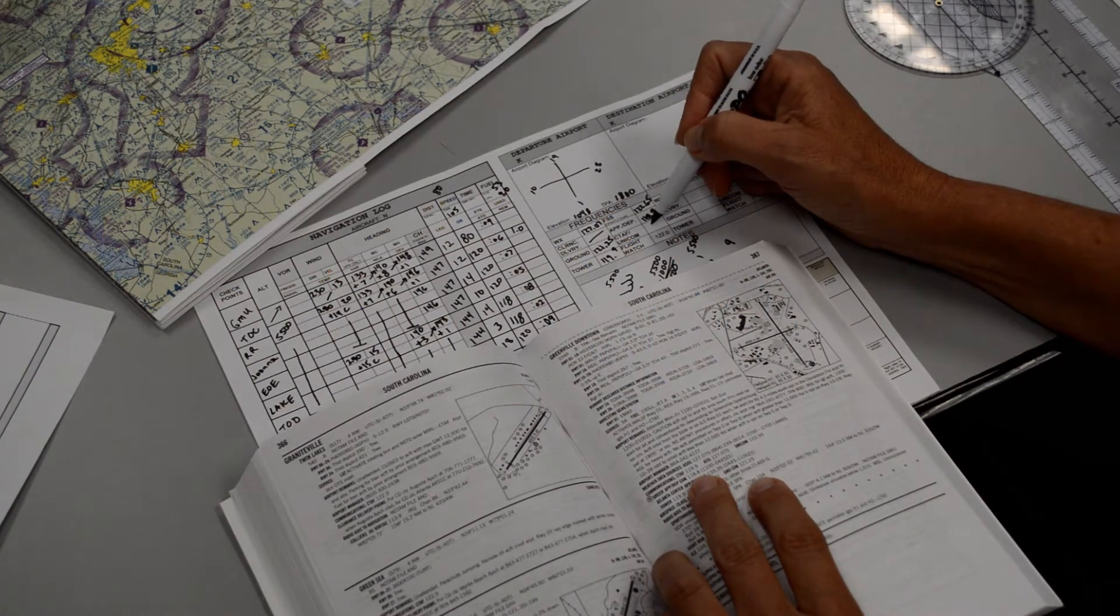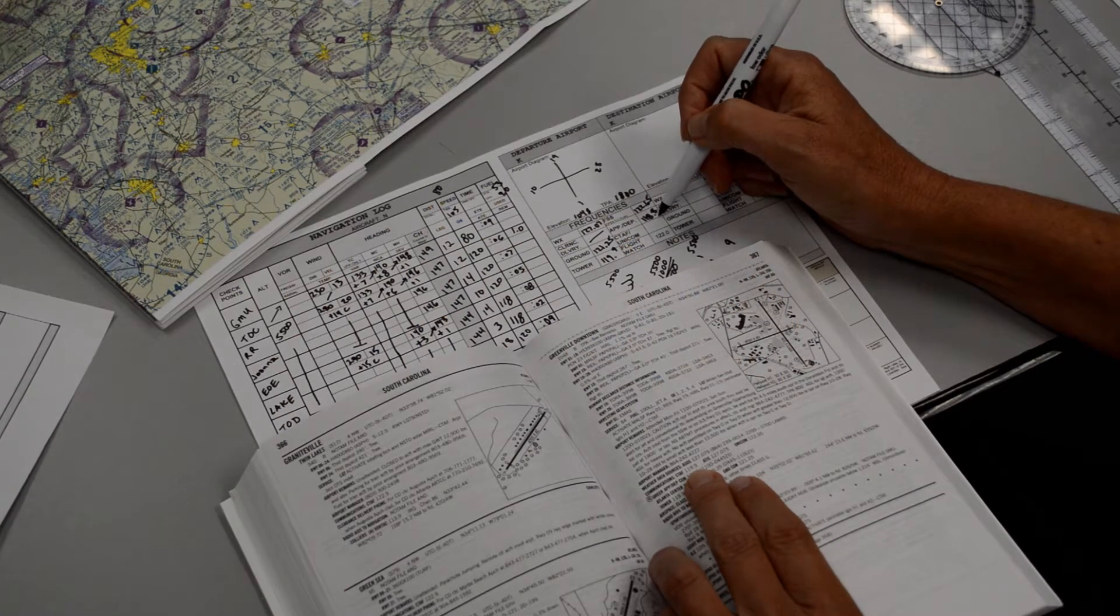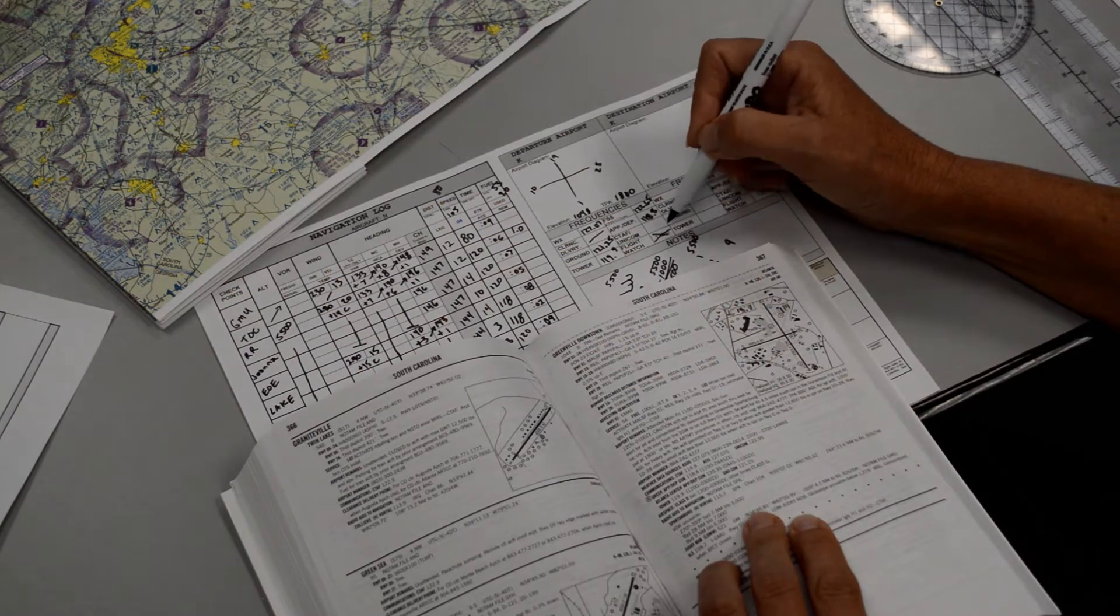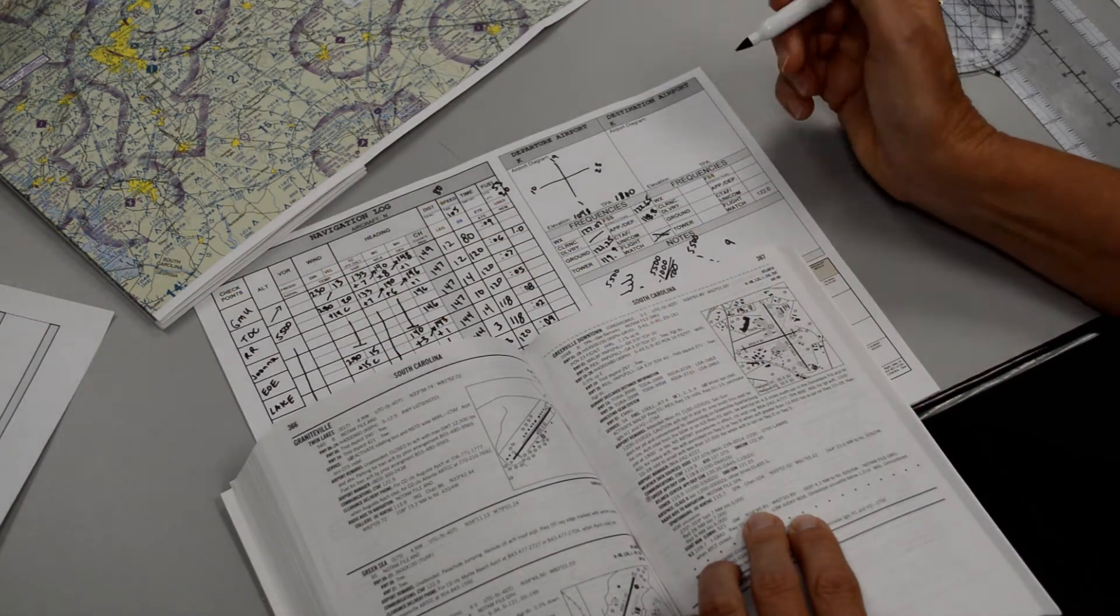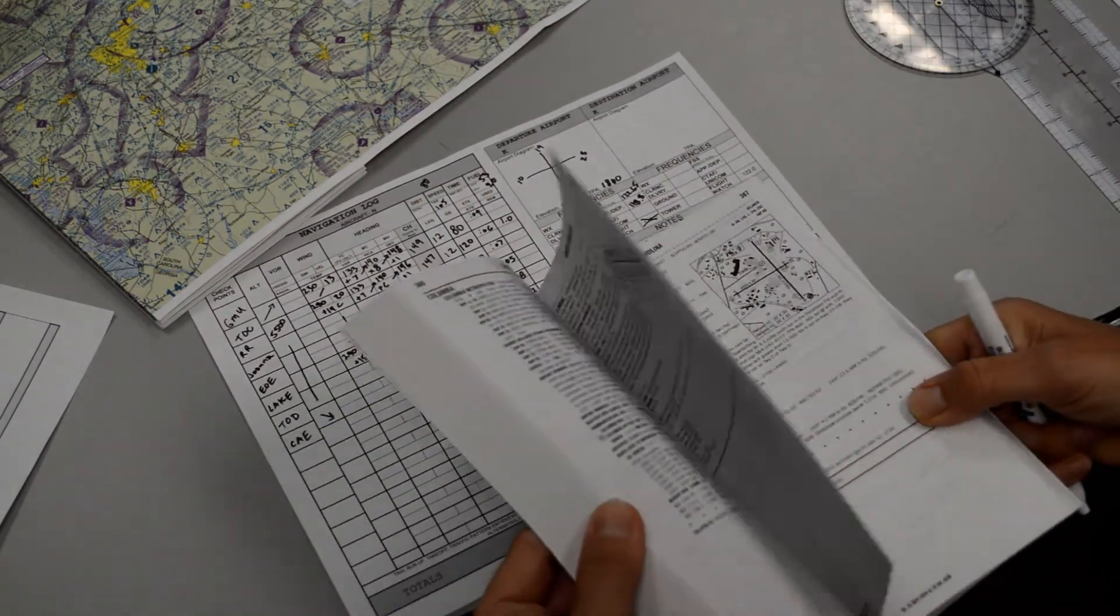And then we have approach and departure frequencies. So down here, you'll notice that Greer approach slash departure, we call them departure if we're leaving the area. We call them approach if we're arriving or passing through the area. But they give you the frequency of 118.8. The CTAF, we don't really need that. But it is the same as the tower if the tower were closed. And Flight Watch that's on this particular form, they did away with that a couple years ago, so Flight Watch no longer exists.